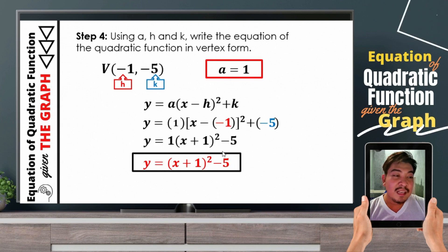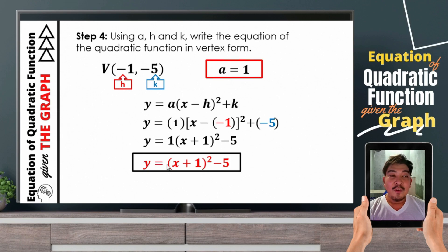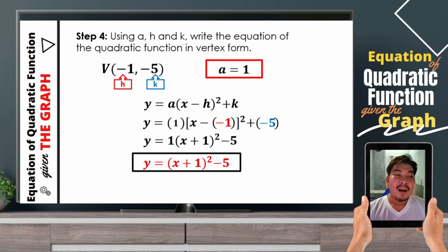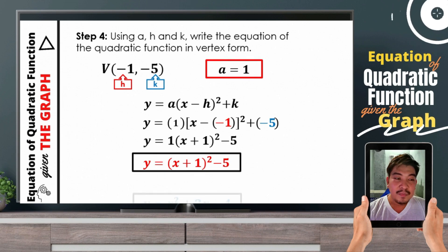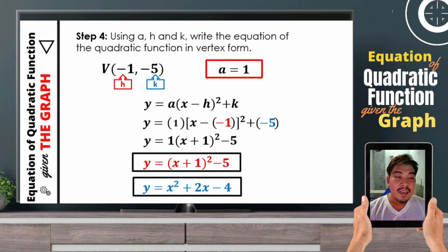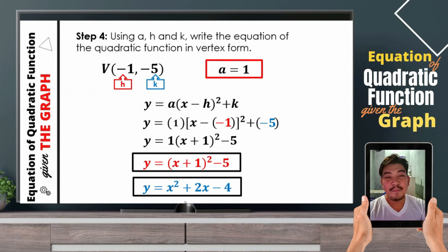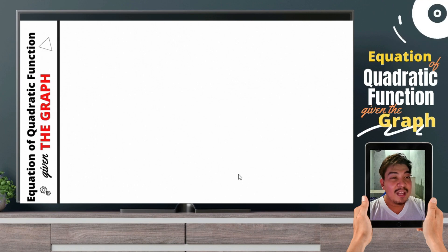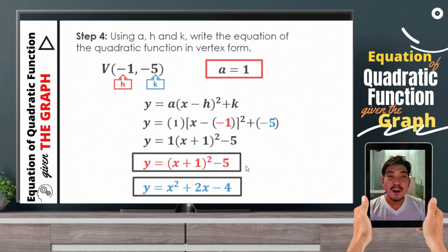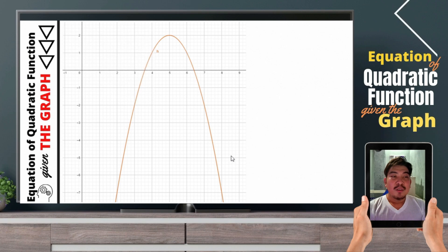So if the equation is like this, it is automatic that the value of a is 1. And if you are asked to rewrite this quadratic function in standard form, that will just be equal to y is equal to x squared plus 2x minus 4. Therefore, either of the two equations will describe the given graph.